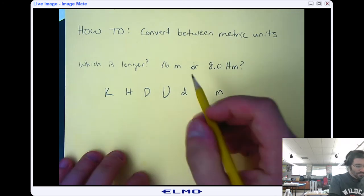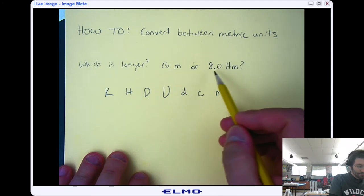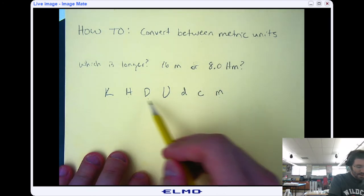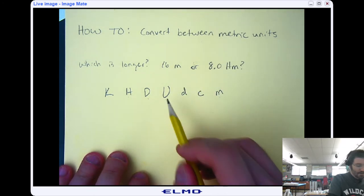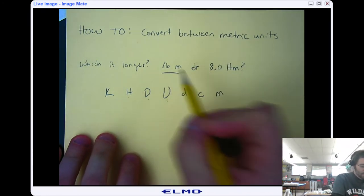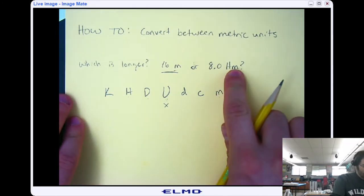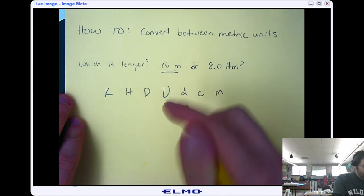So we can either convert from meters to hectometers or from hectometers back to meters. Meters is right here. In order to figure this out, let's go ahead and just convert from meters to hectometers because meters was first. So meters is our base unit, so we're going to start right here. Hectometers is the unit we want to convert to so we can compare, and that's right here.